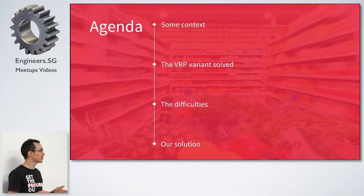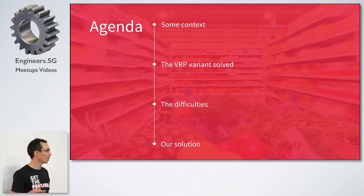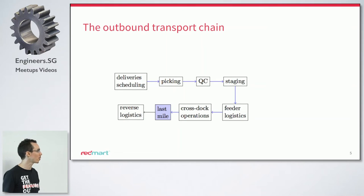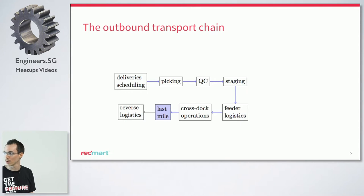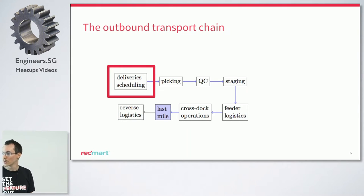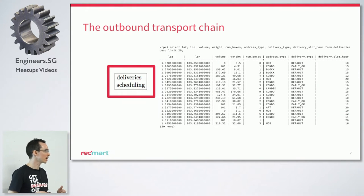We'll explain what particular difficulties we are facing at Redmart with this problem, and with Vikash we will present our engineering solution. The context is what I call the outbound transport chain — everything that happens to deliver your order once you have placed it on the website and it starts being processed at our warehouse and then by our transport team. It starts with what I call delivery scheduling, and this is where our piece of software runs in order to later allow the efficient and on-time delivery of all items while keeping certain quality metrics.